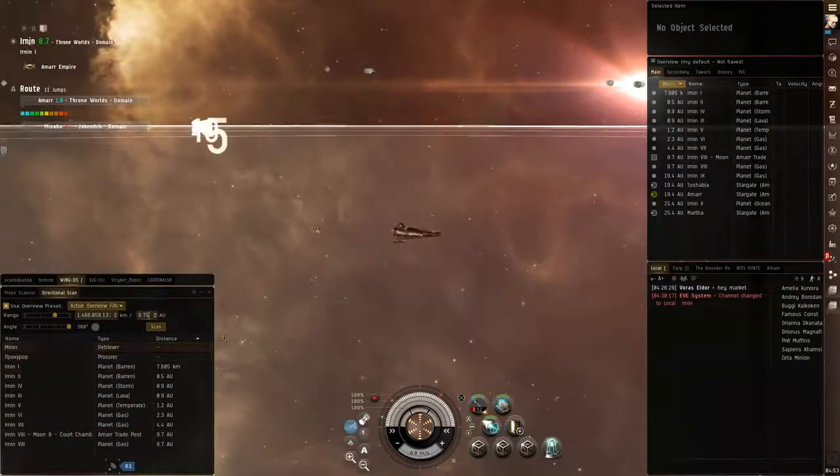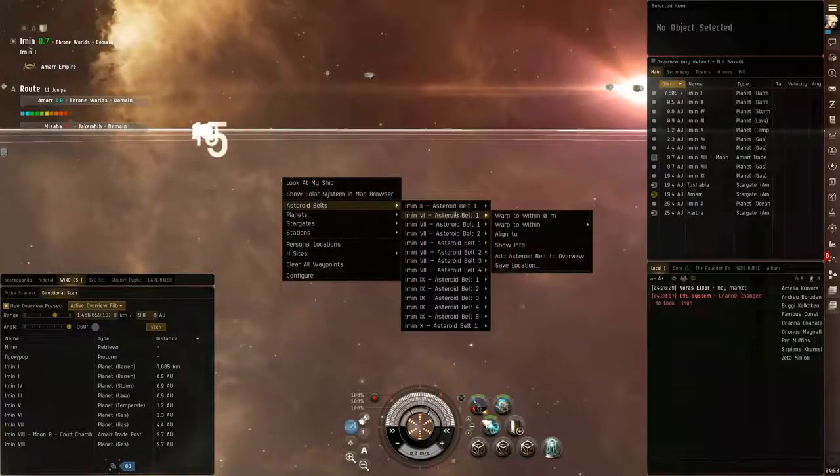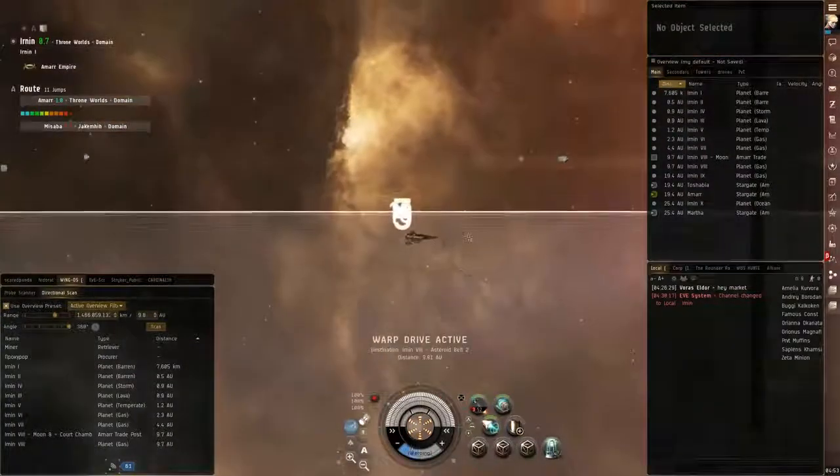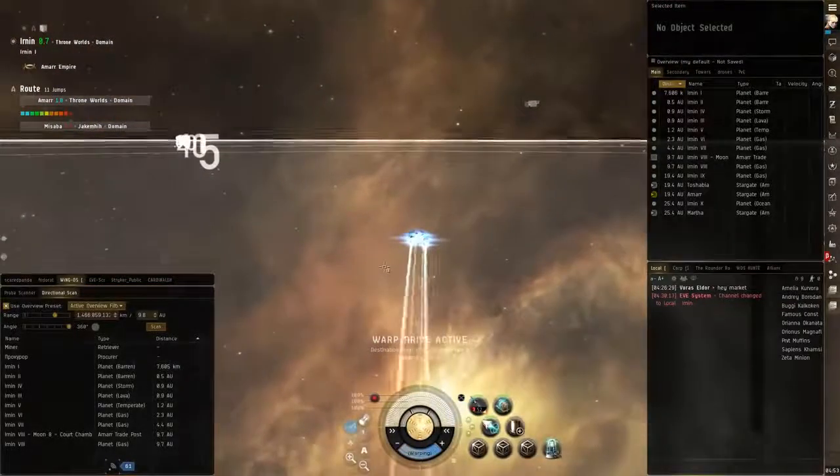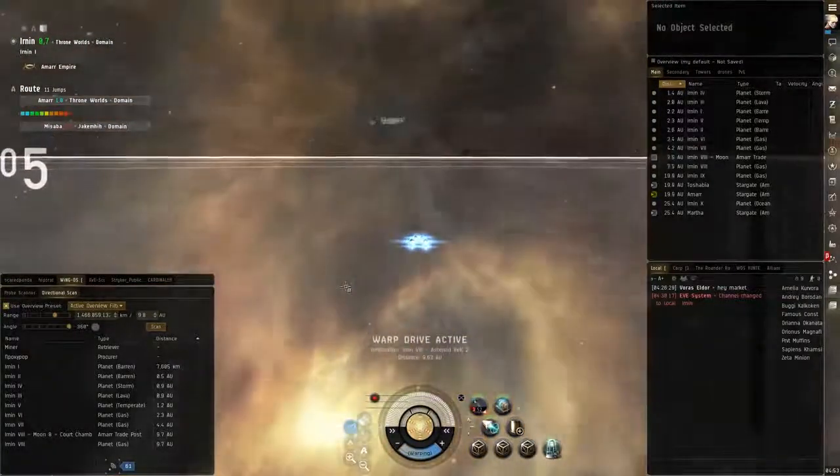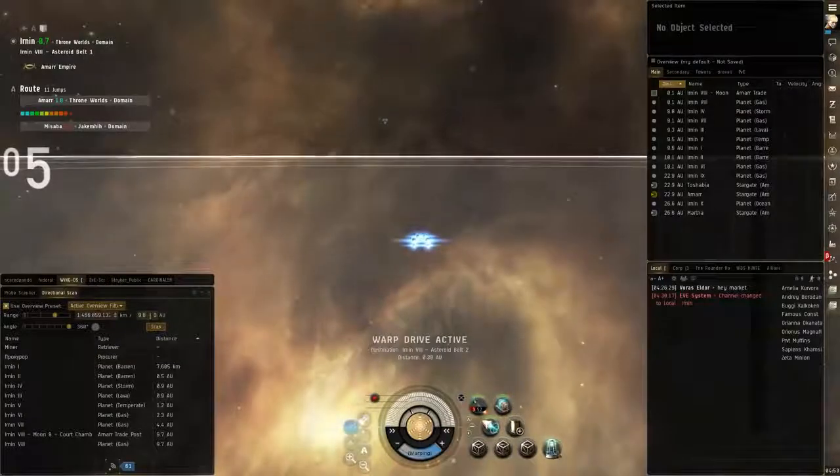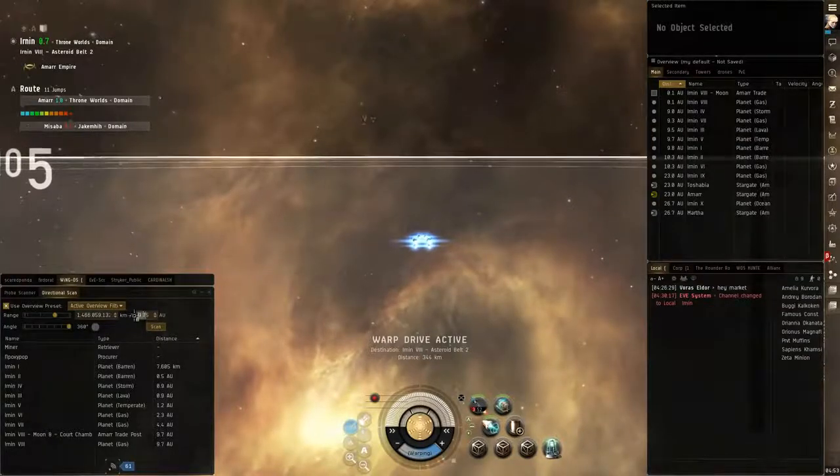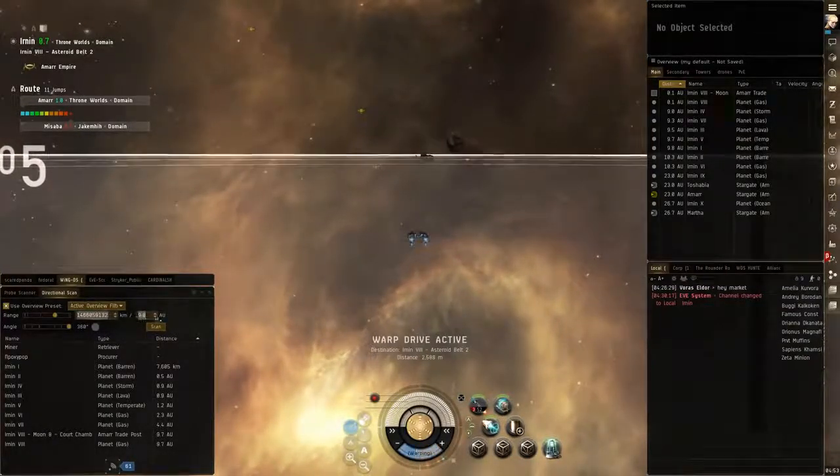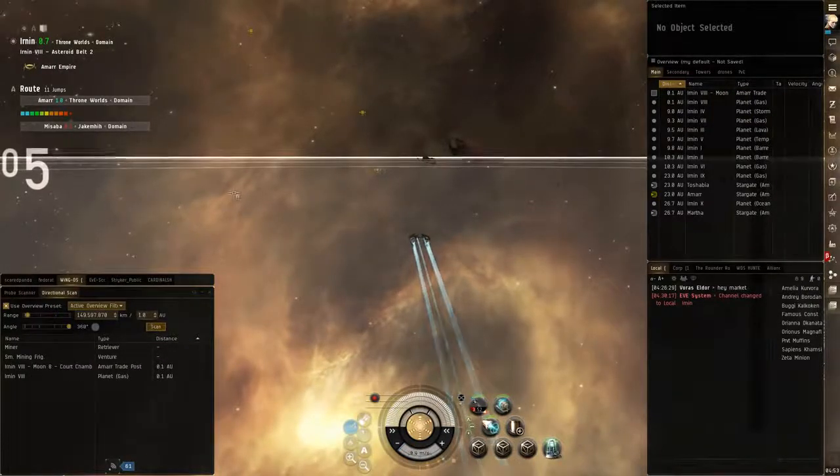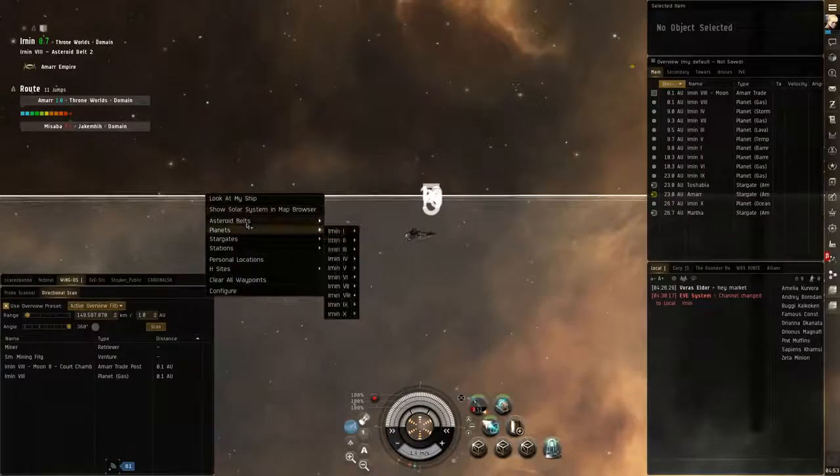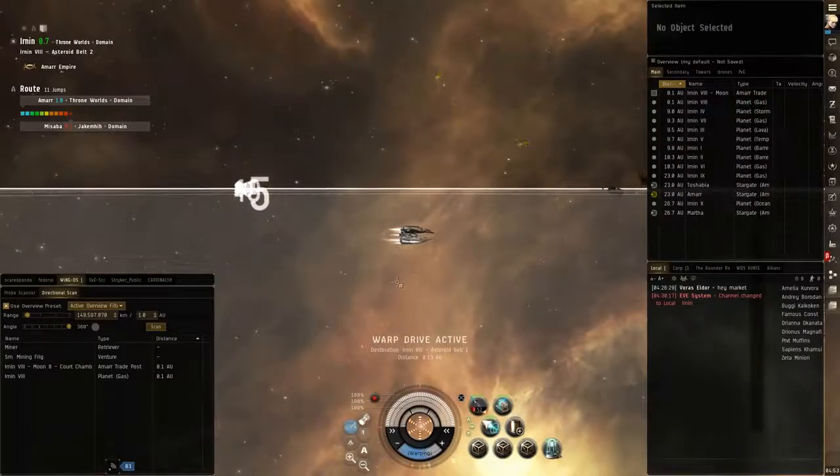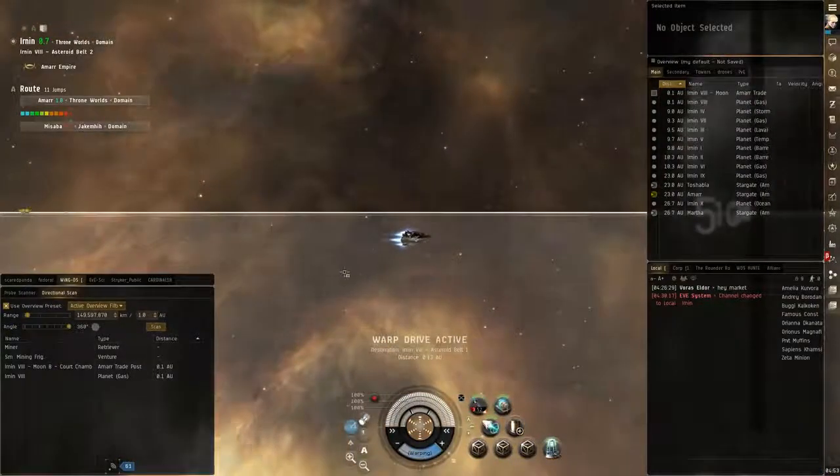Since this is a mining ship, we'll expect him to be in an asteroid belt. So we'll go to asteroid belt at Planet 8. I've actually already scouted this guy out, so I know where he is. We'll fly over there just to confirm that he's there. This is basically how you would do it. But he's definitely within 1 AU, so we're on the right track here.